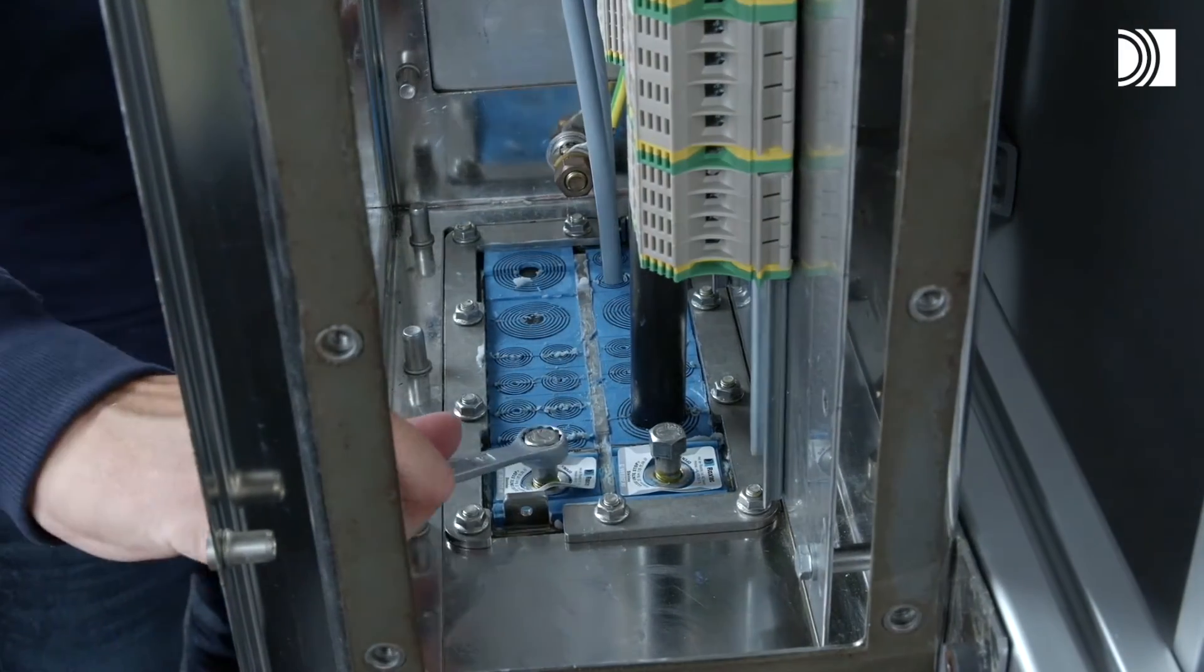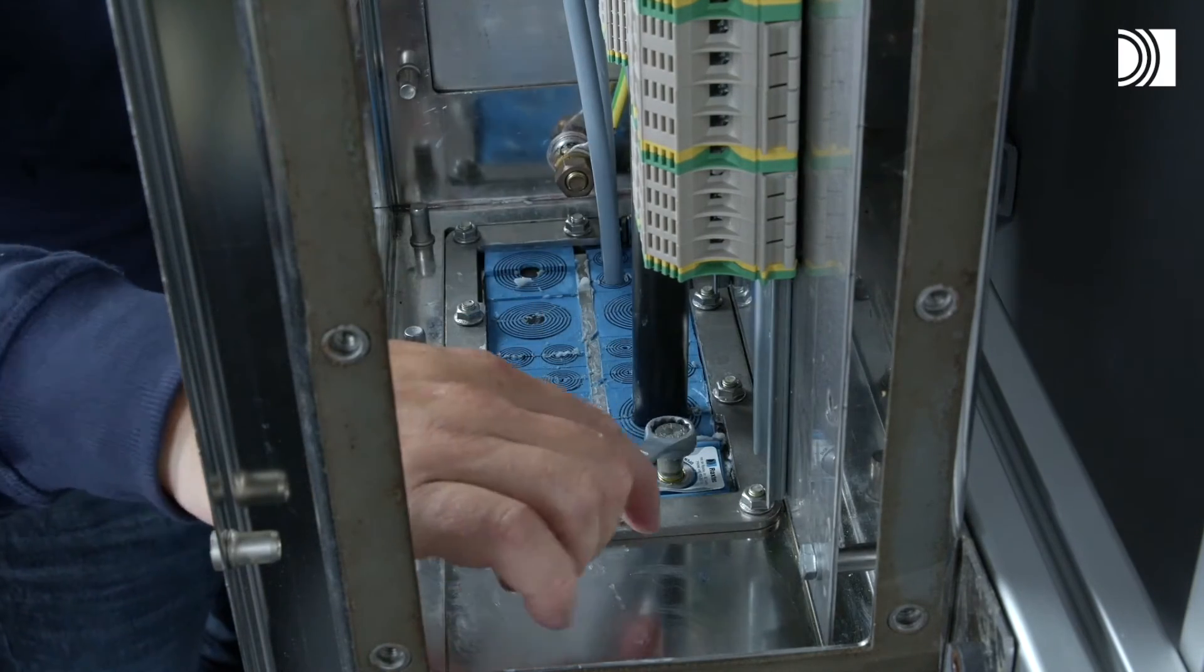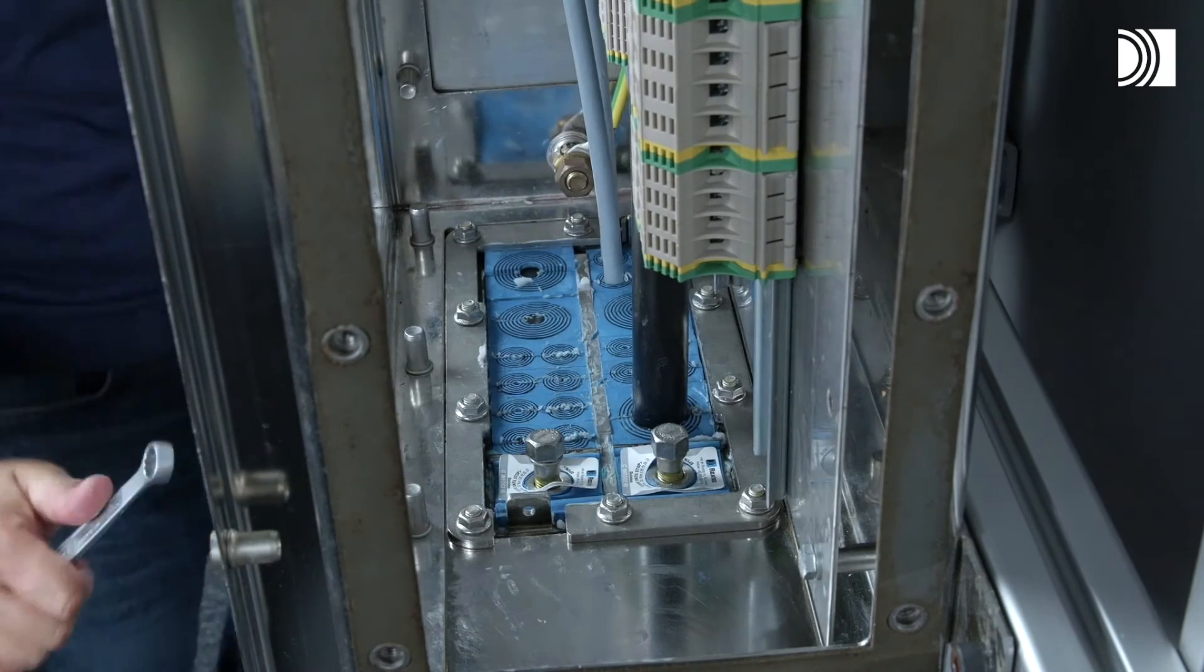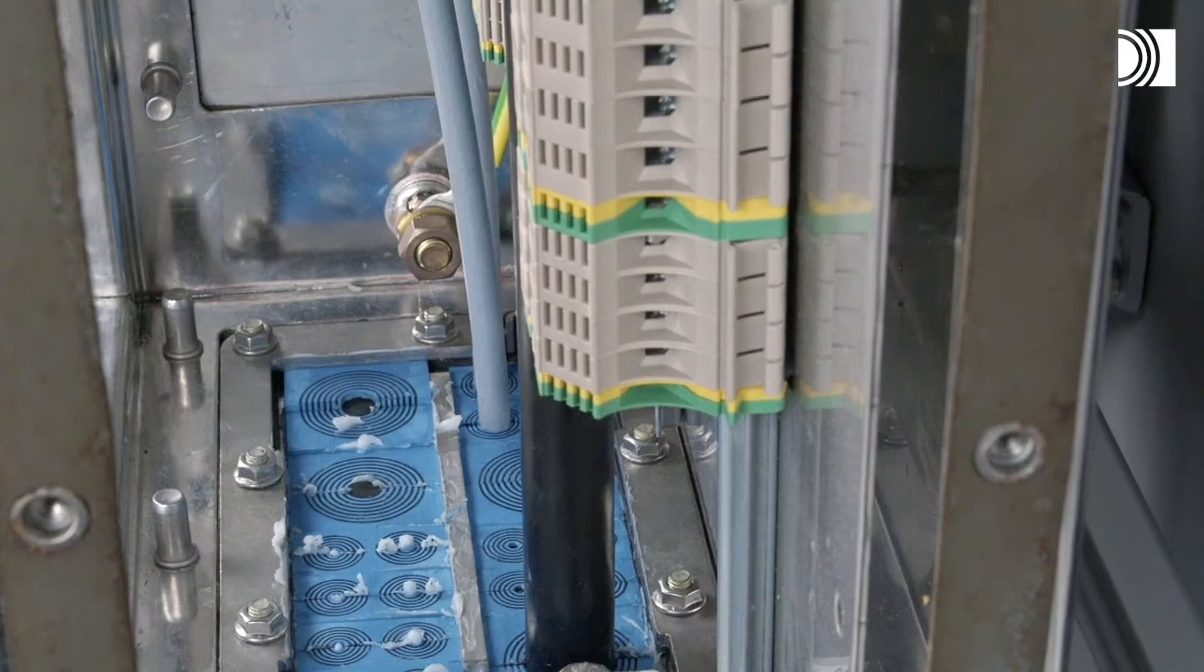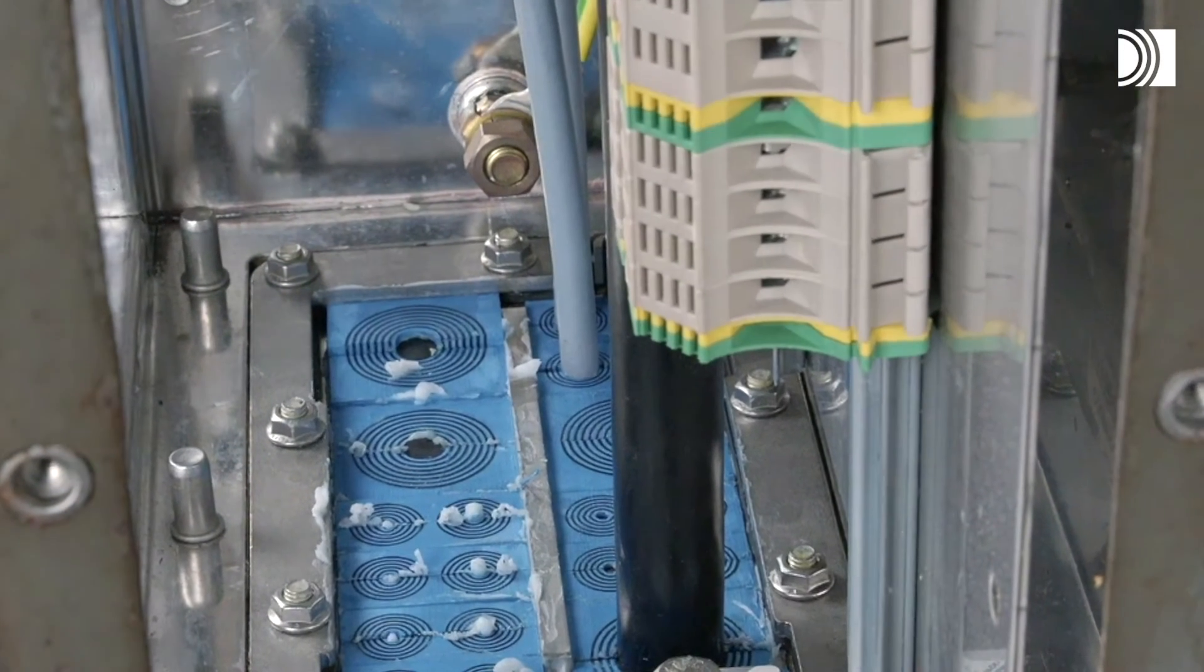Tighten the screws of the compression units alternately until full stop. Excess lubricant is a sign of good compression. Make sure that all modules are placed correctly and fully inserted after compression.